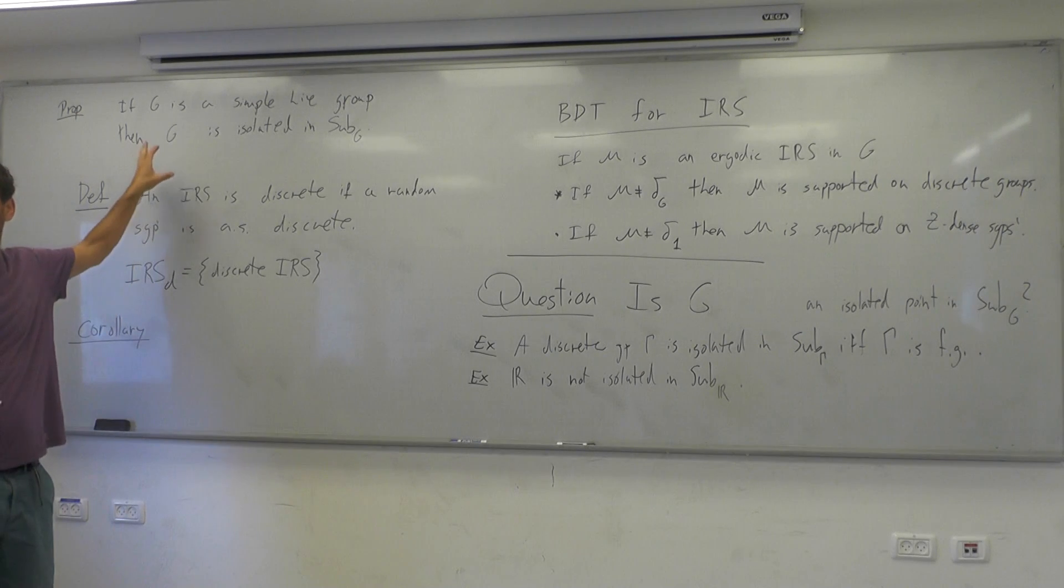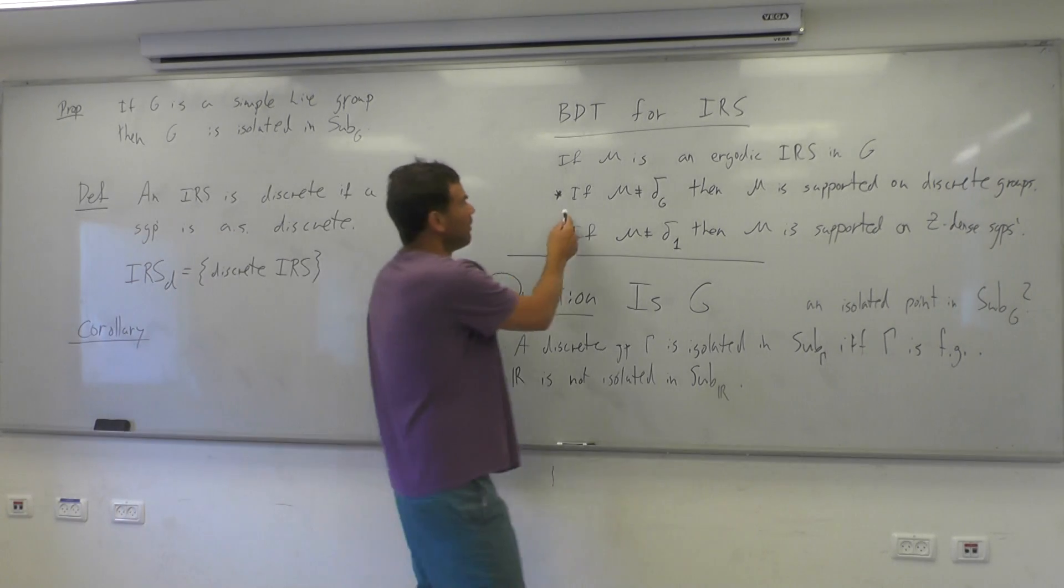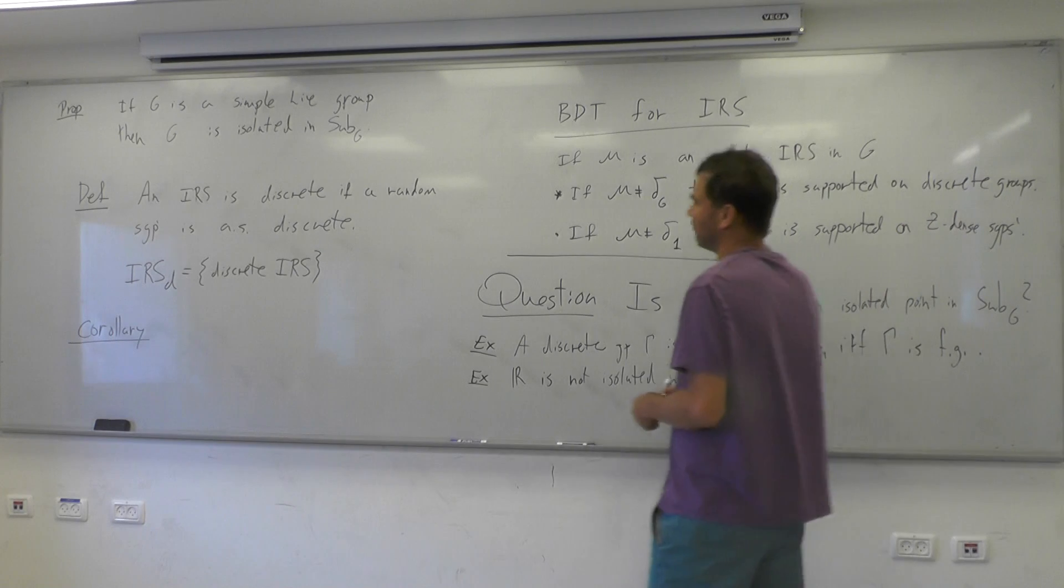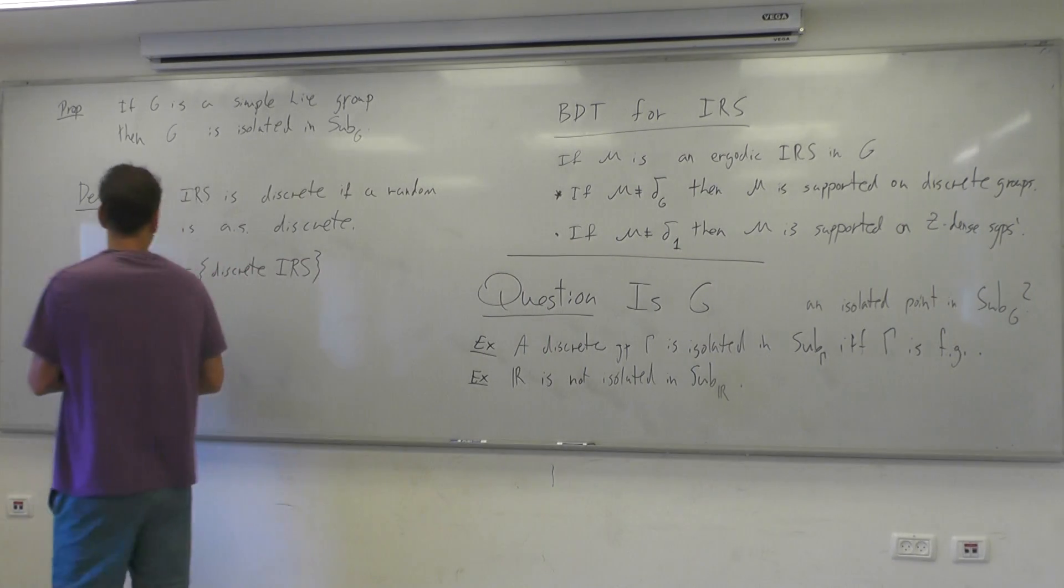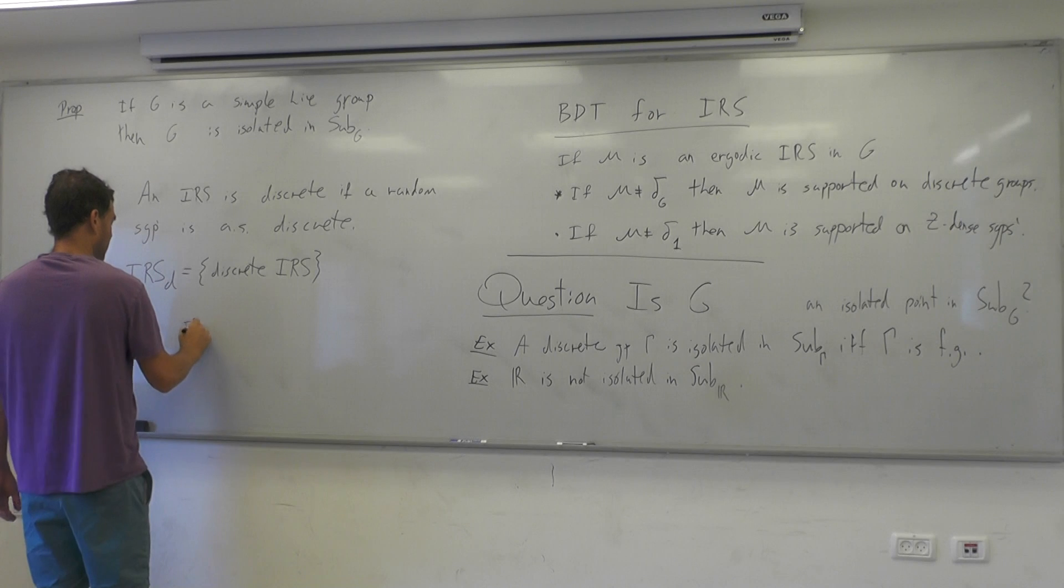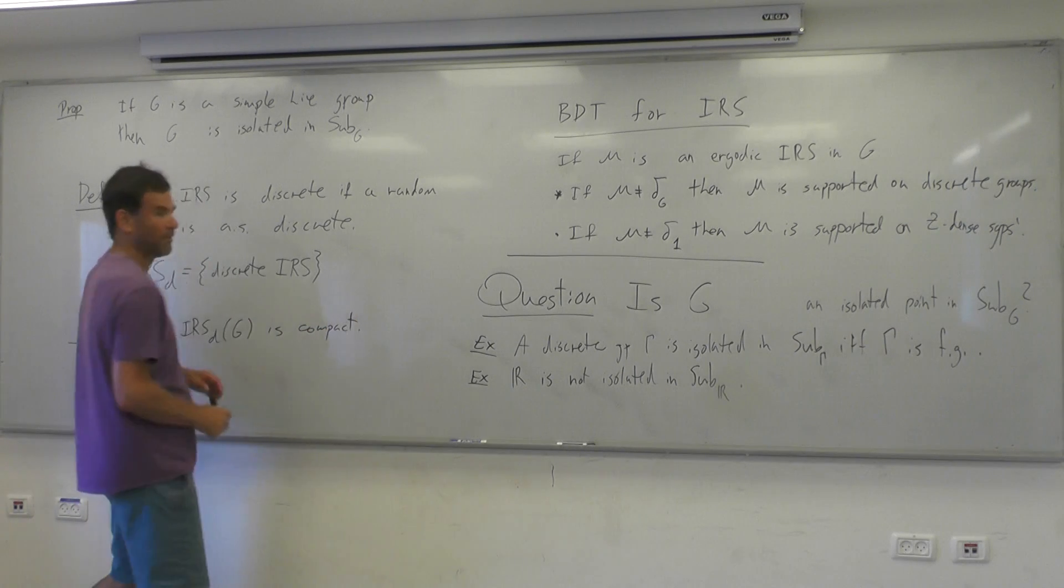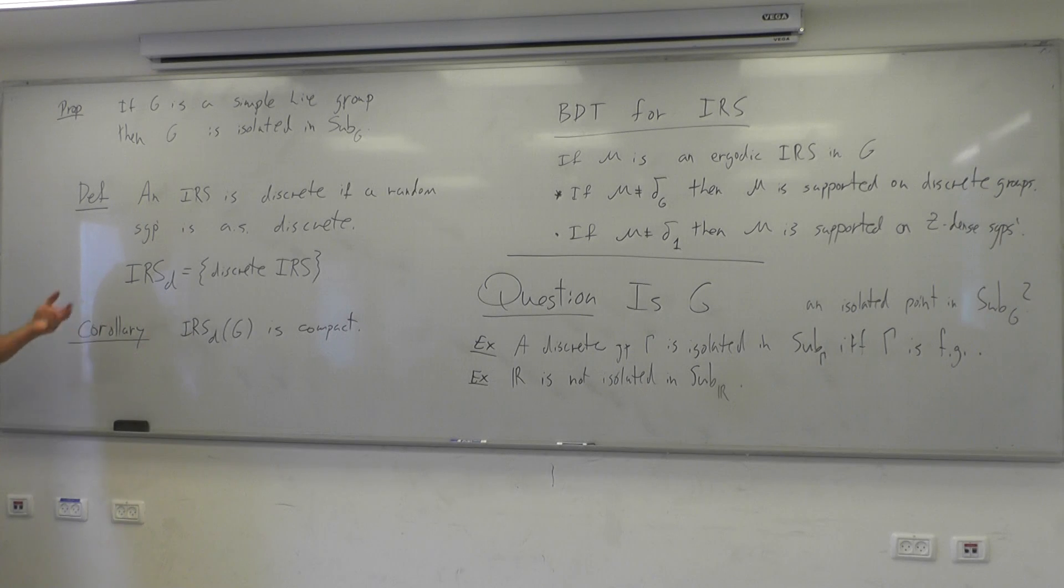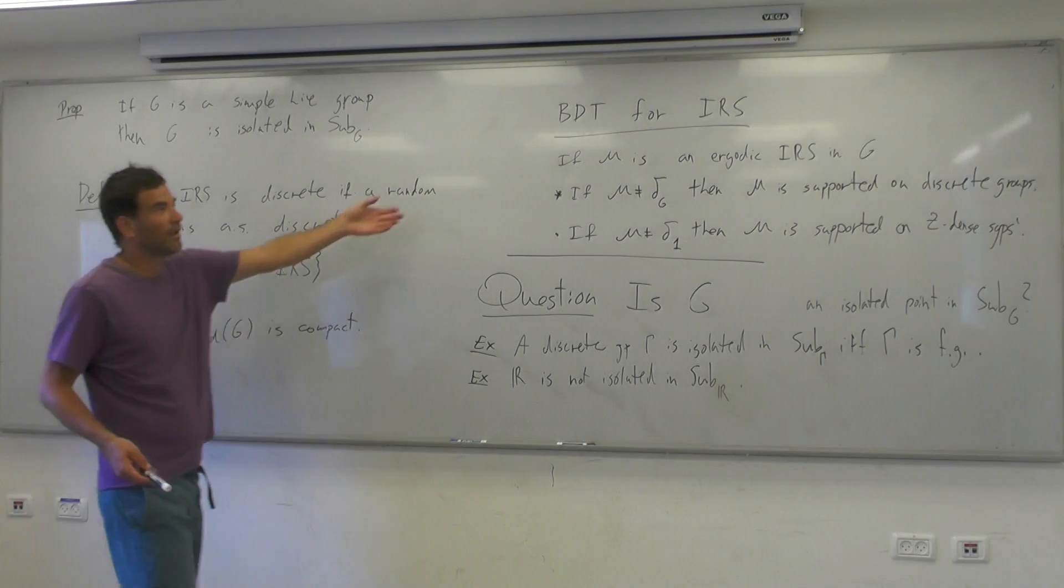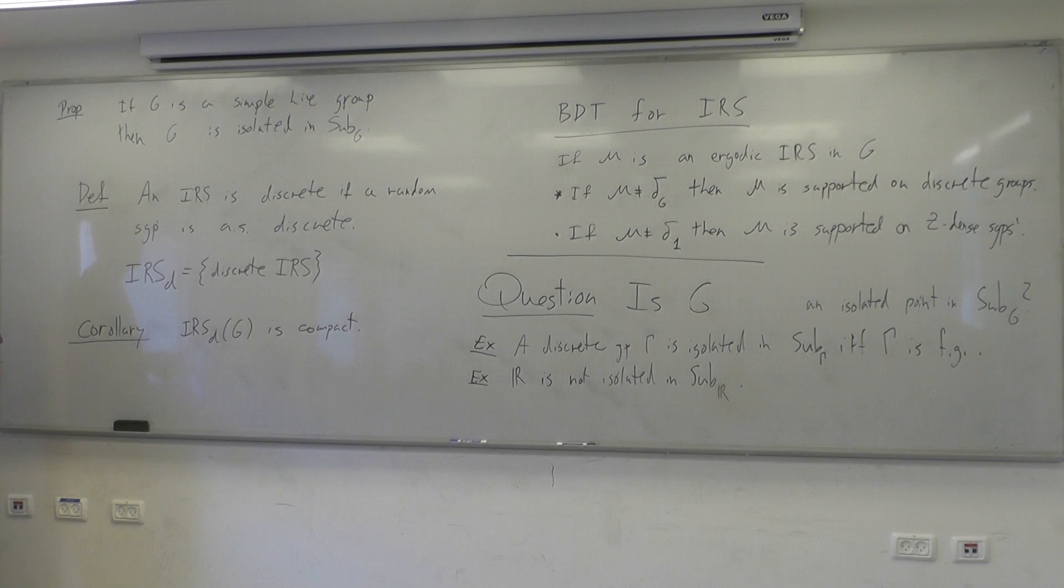And the corollary - it's a corollary of two results. One is the following, let's call it a theorem, it's a very old theorem. Maybe when a theorem is old, it becomes easier, and so it's going to be a proposition. But I mean, okay, there is a short proof for that, that G is isolated in Sub(G). And since it's isolated, and since we have this Borel density theorem - so a corollary of Borel density theorem and the proposition is that for such G, simple Lie group, IRS_d(G) is compact. Why? Because the space of all IRS is compact by Chabauty's theorem, and I removed an isolated point - it stayed compact. So the set of all discrete IRS is compact.